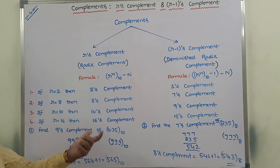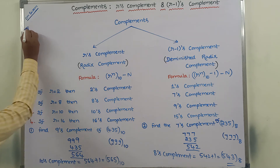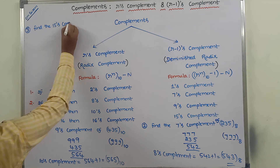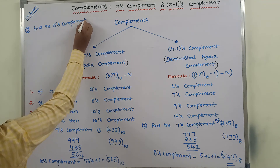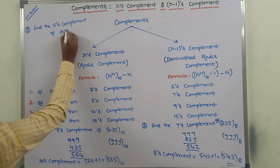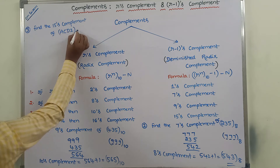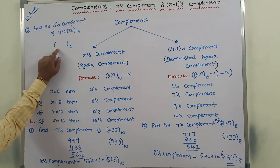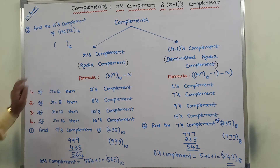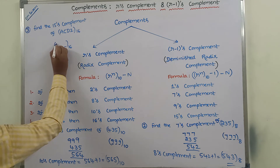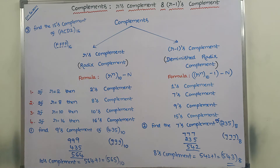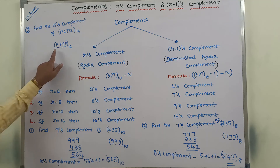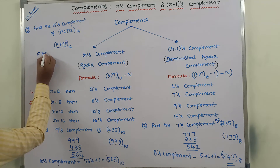In this way, we have to find out any complement. Now we can take another example: find the 15's complement of ACD2 base 16. Whenever the base value is 16, what is the maximum value in terms of 4 digits? That is maximum value is 15, which is represented as F in hexadecimal.